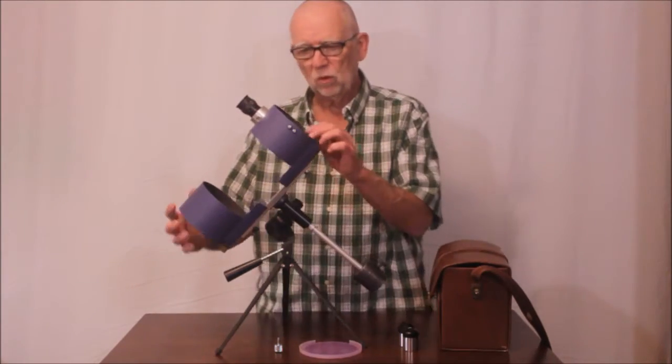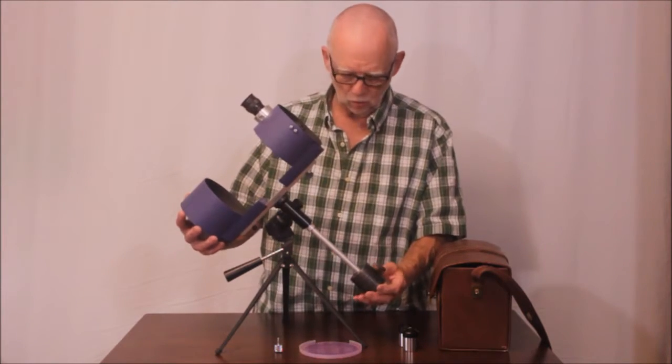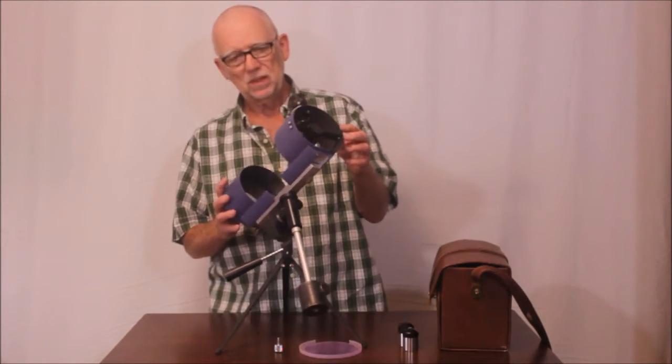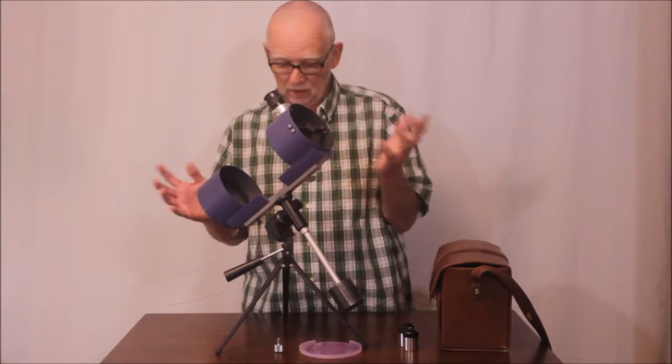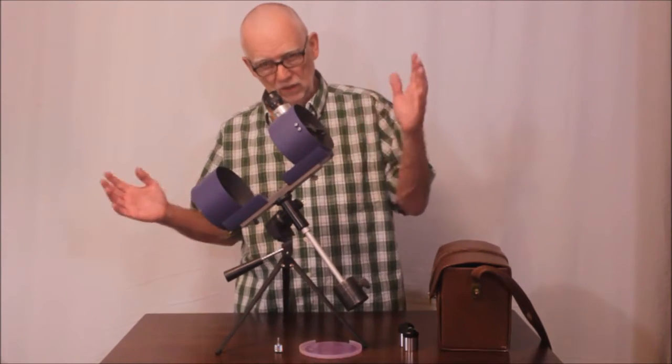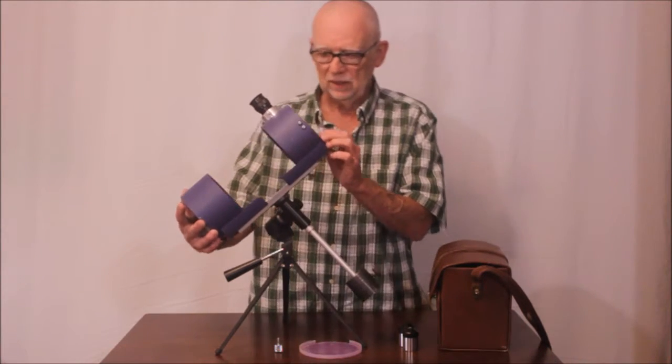And it's a 4 1⁄4 inch, about f4 or so telescope. Very, very fast. That means, because of the speed of the optical system, the optics are not going to be really, really great. They just can't be. A Newtonian that's got that short of a focal ratio. It just, they can't be that good.